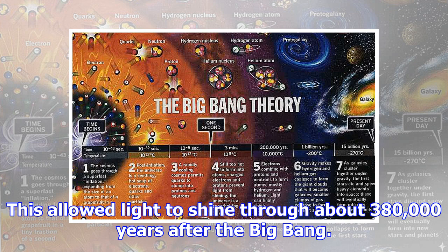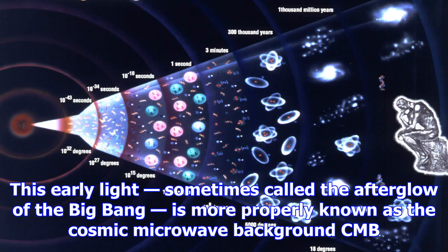Over time, however, the free electrons met up with nuclei and created neutral atoms. This allowed light to shine through about 380,000 years after the Big Bang.